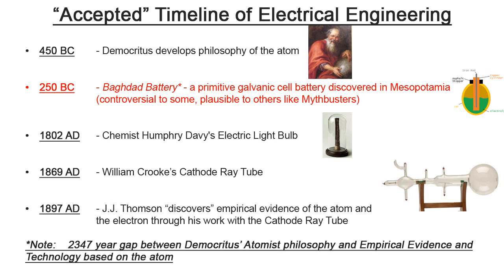In 1802, we have Humphrey Davy's electric light bulb. In 1869 AD, the Crookes cathode ray tube is invented. In 1897, J.J. Thompson uses the Crookes cathode ray tube technology to discover empirical evidence of the atom and the subatomic particle, the electron. There was a 2,347-year gap between the philosophy of the atom in 450 BC with Democritus and the actual technology developed based on that philosophy, which provided empirical evidence in 1897 AD.